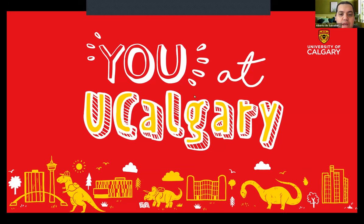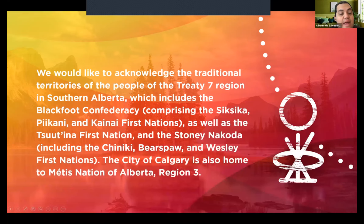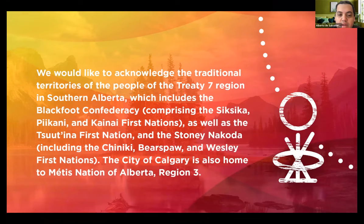First, I would like to start with a land acknowledgement. We would like to acknowledge the traditional territories of the people of Treaty 7 region in southern Alberta, which includes the Blackfoot Confederacy, comprising the Siksika, Piikani, and Kainai First Nations, as well as the Tsuut'ina First Nation, the Stoney Nakoda, including the Chiniki, Bearspaw, and Wesley First Nations. The City of Calgary is also home to the Métis Nation of Alberta, Region 3.